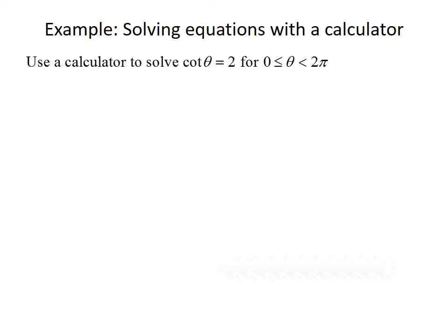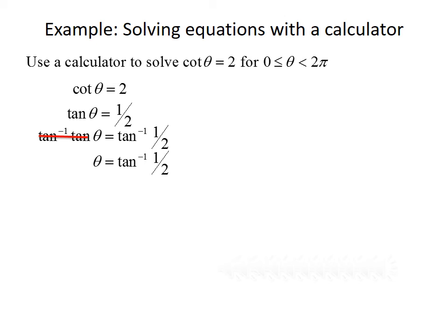Let's do another example using a calculator. This time we want to solve the cotangent of theta equals 2 on the interval from 0 to 2π. We don't have a cotangent button on our calculator, so we rewrite it using the fact that cotangent and tangent are reciprocals. Taking the reciprocal of both sides gives us tangent of theta equals 1/2. Taking the inverse tangent of both sides, the inverse tangent and tangent cancel, leaving theta equals the inverse tangent of 1/2, which our calculator gives as approximately 0.46.